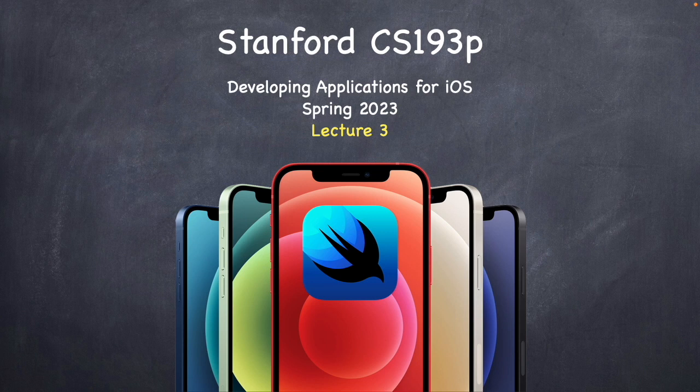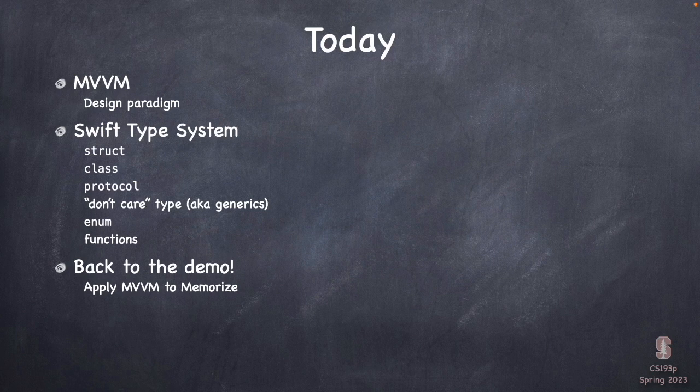This is probably the most slides you're going to see in a row the whole quarter. We do need to cover some basic architecture before we dive into the next part of the demo, which will be the second half of today. Lecture number three has two huge topics: MVVM, which is the architecture and design paradigm you'll use to build an app, and the Swift type system — structs, protocols, and all that.